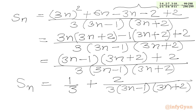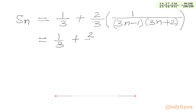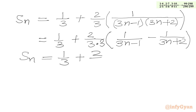Now we will use partial fractions for the second term of SN. We have 1 over 3 plus 2 over 9, and then we split using partial fractions to write 1 over (3N minus 1) minus 1 over (3N plus 2). If we simplify, we get 2 minus (minus 1) which is plus 1, giving 3 in the numerator, so the 3 cancels out. Our final SN is 1 over 3 plus 2 over 9 times the bracket [1 over (3N minus 1) minus 1 over (3N plus 2)].